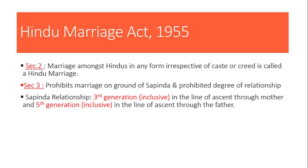Prohibited degree of relationship kehta hai ki kuch relations ke beech bhi jo marriage hai, woh prohibited hai. Jaise ki wife of brother, father's brother's wife, grandmother's brother's wife, brother's sister, uncle, niece, aunt, nephew — ye sare jo relations hain, inke beech mein marriage prohibited hai as per Section 3. Marriage will be totally void as described under Section 3.